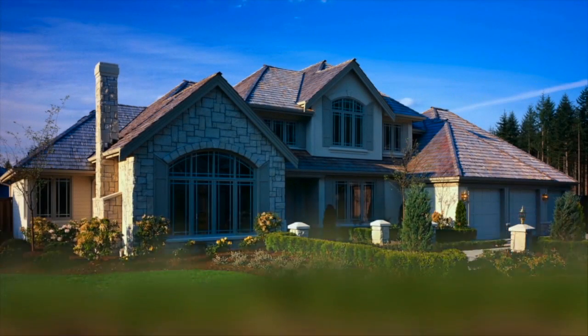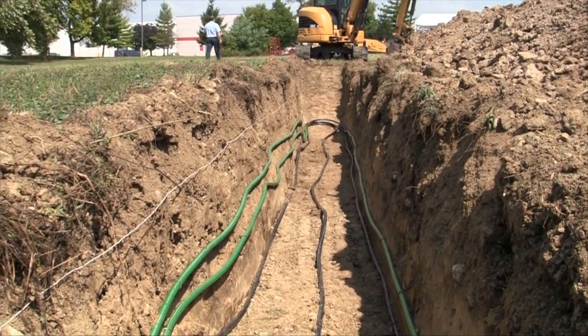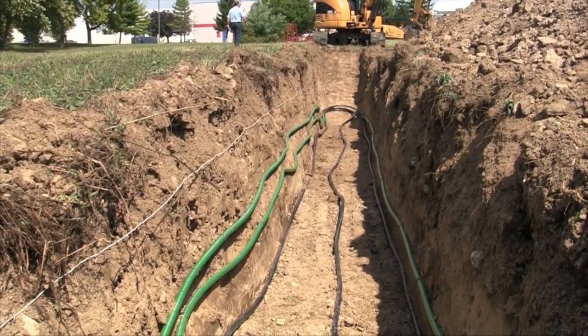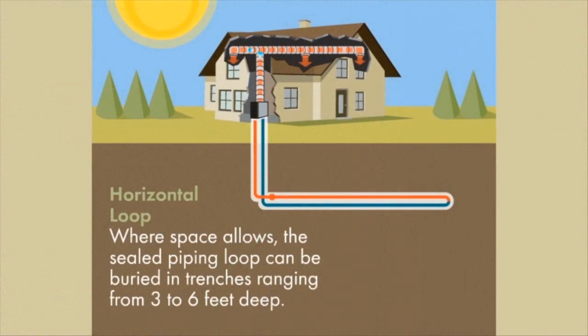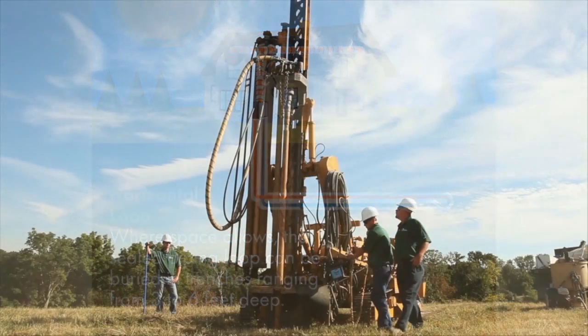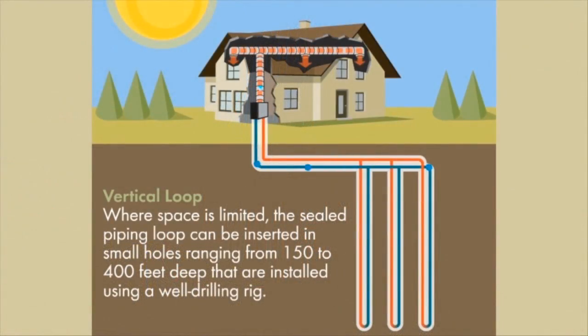Let's take a look at geothermal loop systems. There are several different ways to install a geothermal loop system. Where space allows, horizontal loops are the most cost-effective loop design for most homeowners. If space is limited, a vertical loop system is often the best choice.